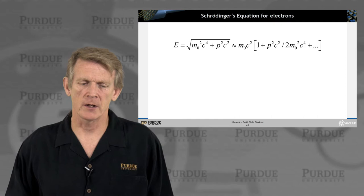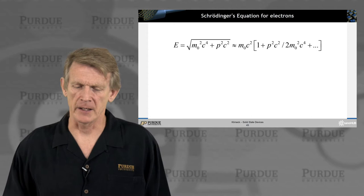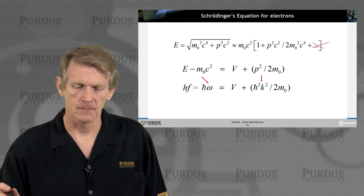So we expand, we pull out M0c squared out of the root and expand 1 plus pc squared over M0 squared c squared in a Taylor expansion. And if we do that and throw away the last terms here at the end...